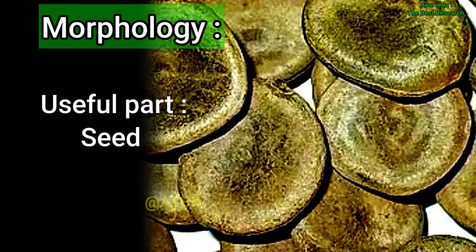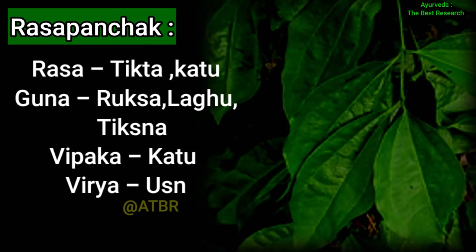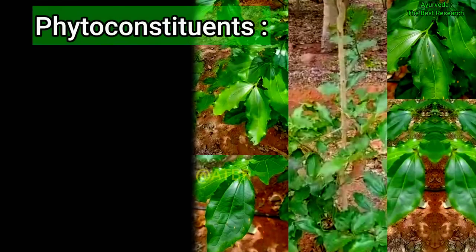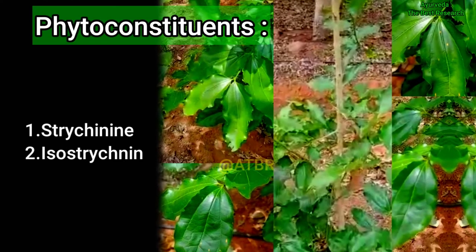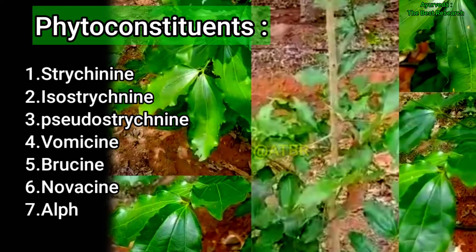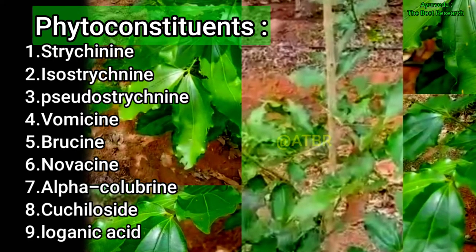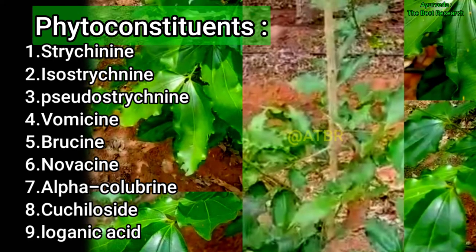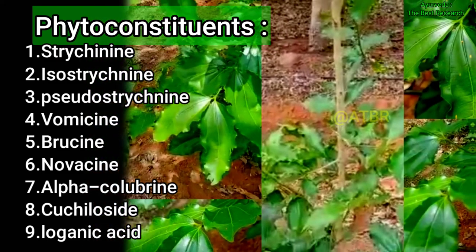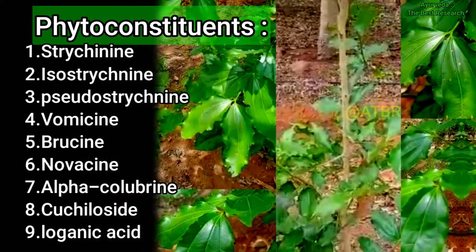The useful part is the seed. Rasa Panchaka: Rasa is tikta and katu; Guna is ruksha, laghu, and tikshna; Vipaka is katu; Virya is ushna. Phytoconstituents are strychnine, isostrychnine, pseudostrychnine, vomicine, brucine, novacine, alpha-colubrine, kuchilocine, and the glycoside loganin.